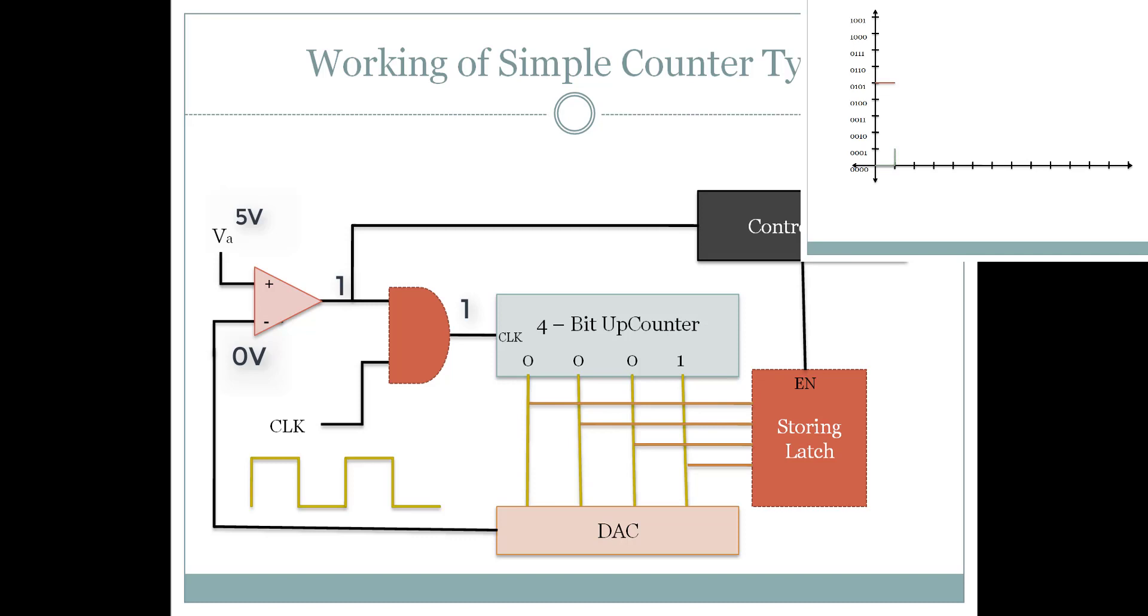So now the counter changes to 0, 0, 0, 1. The output of DAC changes to 1 volt. Again, 5 volts is greater than 1 volt. The counter changes to 0, 0, 1, 0 and the DAC reads or gives 2 volts.